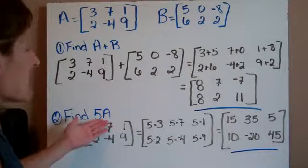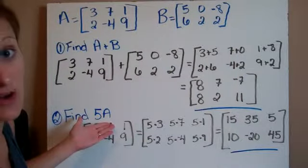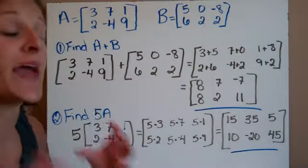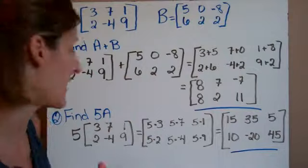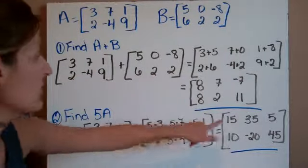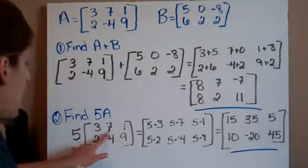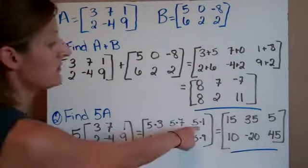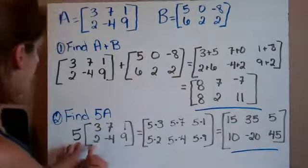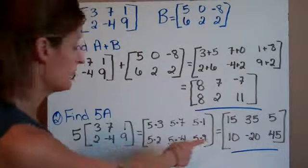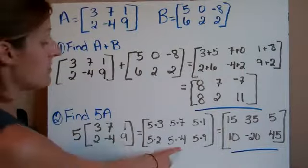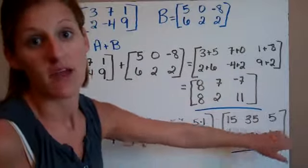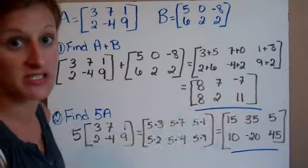This second time it wants us to multiply by a scalar of 5 into the A matrix. Remember, you just multiply everything in that A matrix by 5. So I do 5 times 3, which is 15. 5 times 7, which is 35. 5 times 1, which is 5. 5 times 2, which is 10. 5 times negative 4, which is negative 20. And 5 times 9, which is 45. And here is my new matrix for my answer.